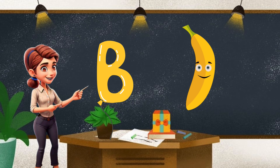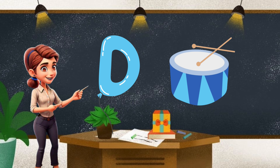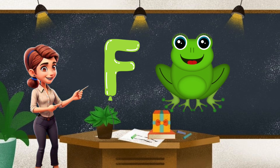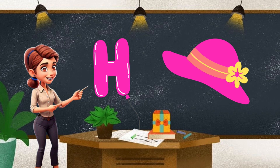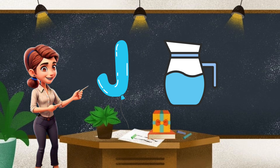A for apple. B for banana. C for car. D for drums. E for elephant. F for frog. G for grapes. H for hat. I for ice cream.